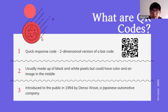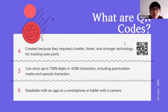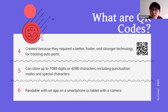QR codes were introduced to the public in 1994 by a company called Denso Wave, a Japanese automotive company. They created this because they required a better, faster, and stronger technology for tracking auto parts — QR codes were a quicker way of scanning and tracking auto parts. A typical QR code can store up to 7,089 digits or 4,296 characters, including punctuation marks and special characters.